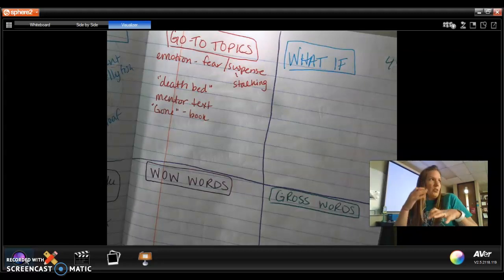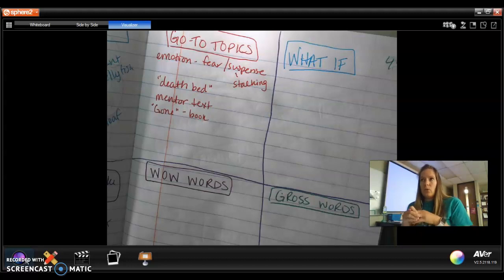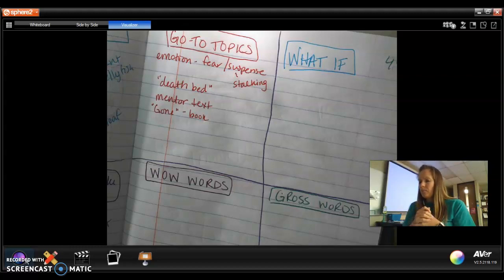There's a book called Gone where at the very beginning of the book, all of the adults over, everybody over the age of 12 just disappears or 15. They're in school and the teachers are teaching, and then all of a sudden everybody other than the people who are 15 years old or younger disappear. So I will sometimes write that, like my characters are walking somewhere and all of a sudden people disappear and they're looking around trying to figure out what's going on.